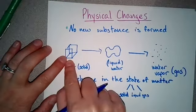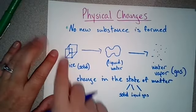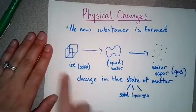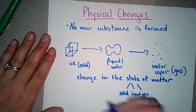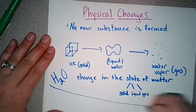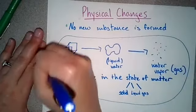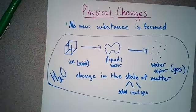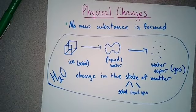Water can go back to being ice if you apply coldness to it. Liquid can go back to ice if you put it in the freezer. This can go around and around and around because no new substance is formed. It's all H2O. All of this is H2O. It is just a change in the state of matter, all right?